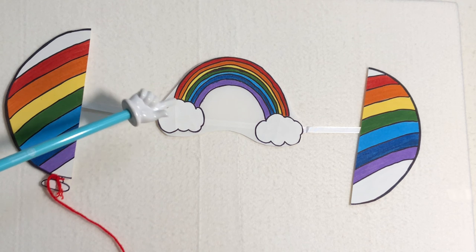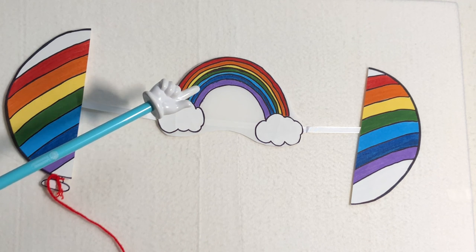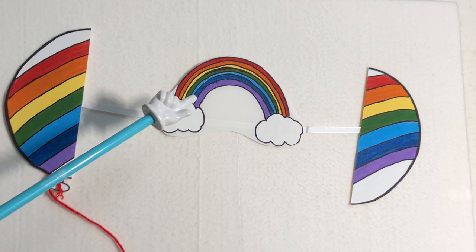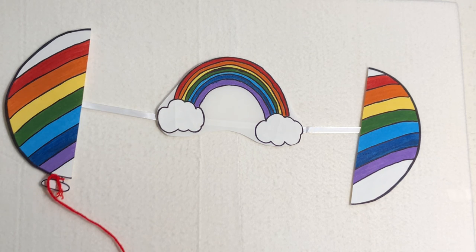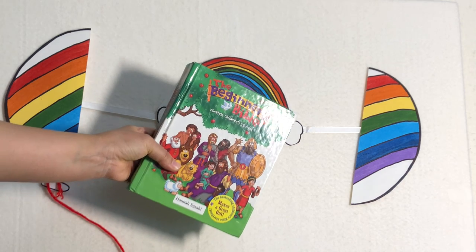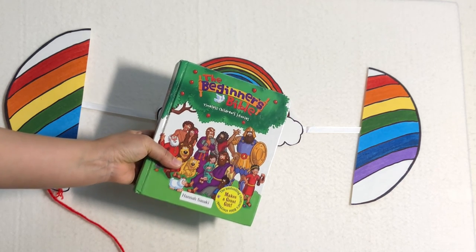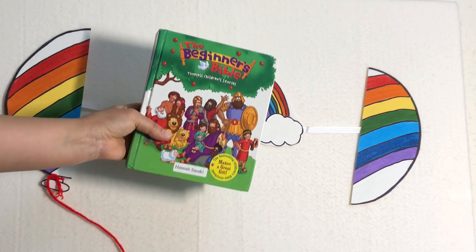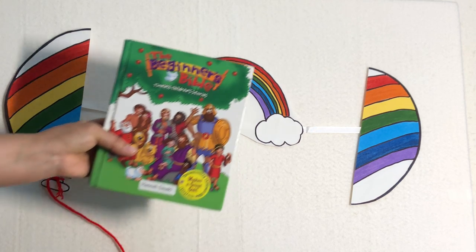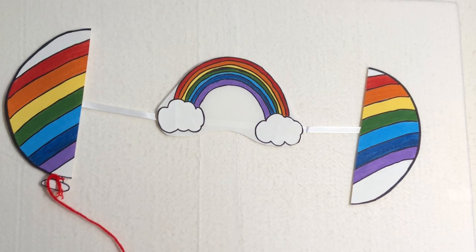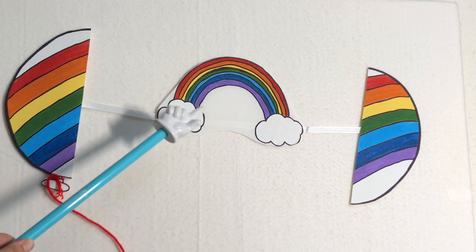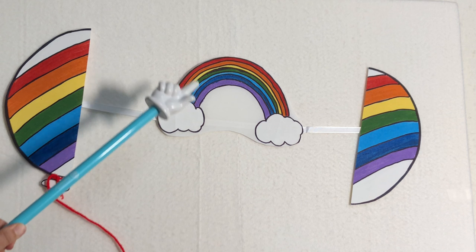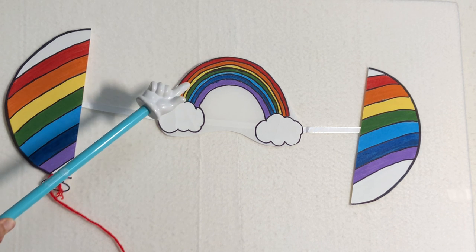Have you ever seen a rainbow in the sky? Do you know who made the rainbow? God did. The Bible in Genesis 9 said, God put the beautiful rainbow in the sky. It was a sign of His promise to never flood the whole earth again. God loves you so much. He protects you, watches over you, and takes care of you all the time. Next time you see a rainbow, please remember God's promise and His amazing love.